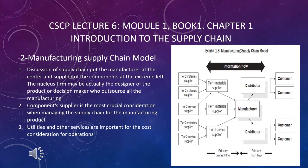Let's start the second manufacturing supply chain model. The discussion of the supply chain puts the manufacturer at the center and the supplier of the components at the left. Looking at Exhibit 1-6, the nucleus firm, which is a manufacturer, may actually be the designer of the product or the scene maker who outsources all the manufacturing. Component supplier is the most critical consideration when managing the supply chain for the manufacturing product. Utilities and services are important for the cost consideration of the operations.